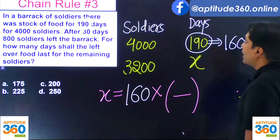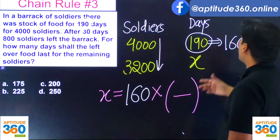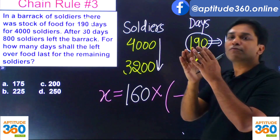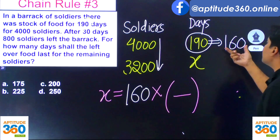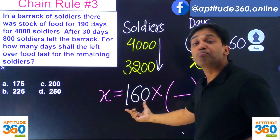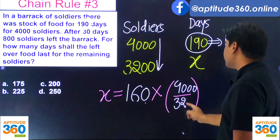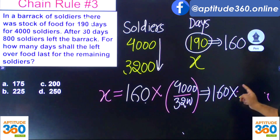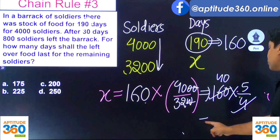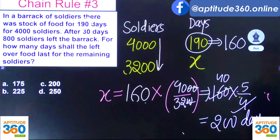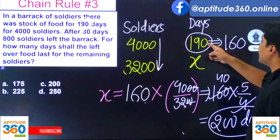So rather than writing 190, write 160 to get the right answer using Chain Rule. Since number of soldiers is decreasing — previously we had 4000, now we have 3200 — if the number of soldiers is lower, the days will increase, meaning the answer will be more than 160. So this ratio has to be more than 1, which is 4000 upon 3200. Simplifying: 4000/3200 = 5/4, and 160 × 5/4 = 200 days.